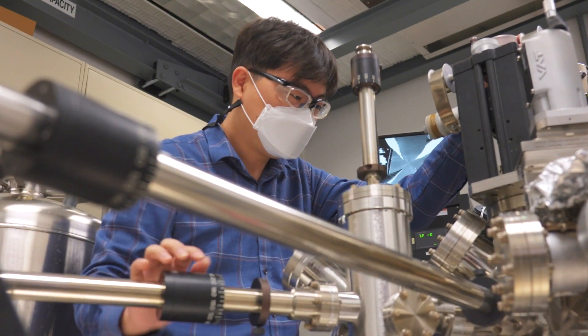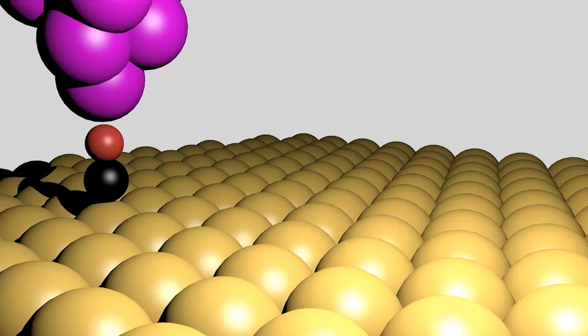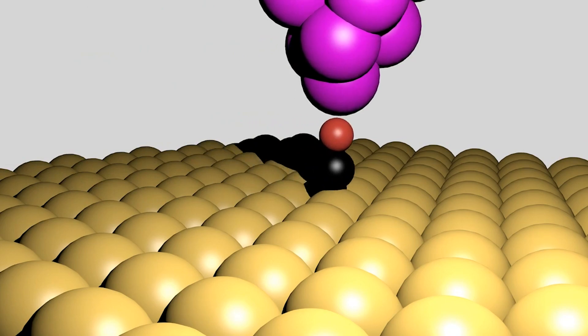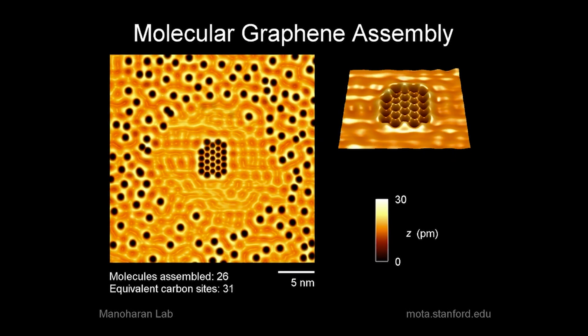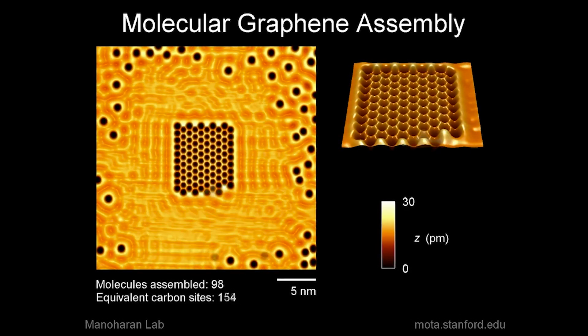My job is using a scanning tunneling microscope to look at materials at the atomic scale. With this microscope, we can see the individual atoms in materials and also we can see their quantum properties. By using that, we can figure out what's the great part, what's the quantum phenomena we can find out from these materials.